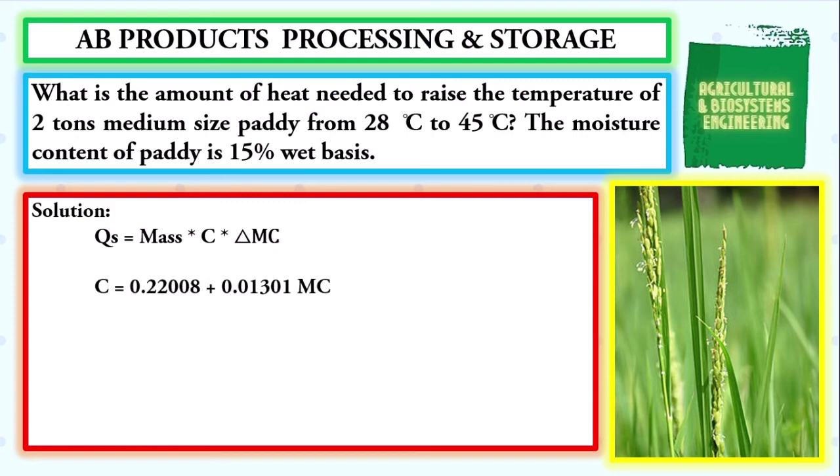We begin solving the value of our specific heat. To solve for specific heat, we will use the formula C equals 0.22008 plus 0.01301 times the moisture content in wet basis. We substitute values giving us specific heat equals 0.22008 plus 0.01301 times 0.15. We simply solve and we have the value for specific heat of 0.2220 BTU per pound degree Fahrenheit.